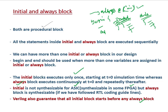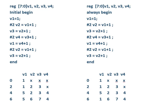Verilog also guarantees that all initial blocks start before any always block. So if there is an always block and an initial block inside your design, the initial block is executed first, then the always block. Now let's look at an example to understand what is the difference between initial and always.